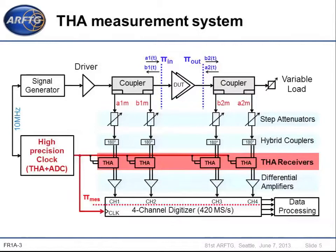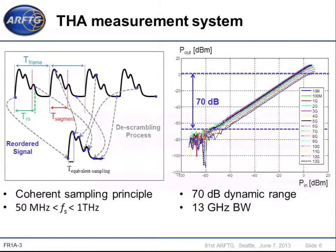These slides describe the four-channel proposed THA-based measurement system realized at XLEM. This system is based on the use of four THA receivers sharing the same clock with an analog-to-digital converter to directly digitize RF periodic signals. This system works with a coherent sampling principle and can achieve high equivalent sampling frequencies. The coherent sampling principle has already been presented at a previous RF-TIG conference. The main idea is to reduce the acquisition time while maintaining a constant real sampling frequency and to achieve high equivalent sampling frequency rates.